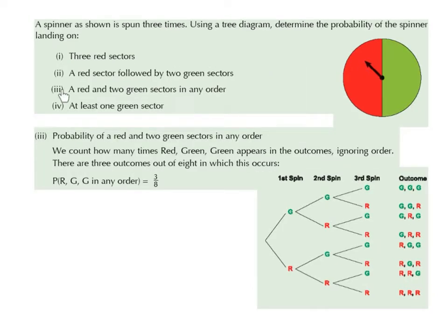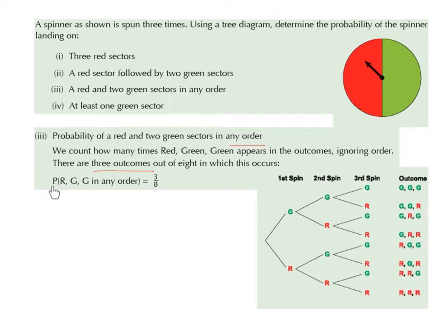Part 3: what's the probability of landing on a red and 2 green sectors in any order? We count how many outcomes contain 1 red and 2 green, ignoring order. We have GGR, GRG, and RGG — that's 3 outcomes in total. So the probability of a red and 2 green sectors in any order is 3 over 8.